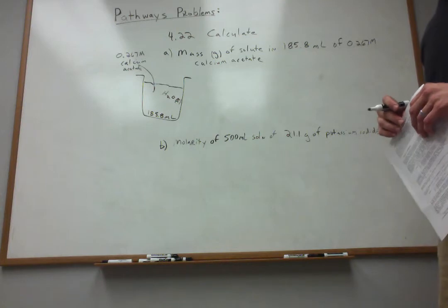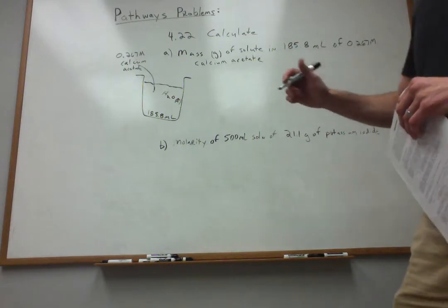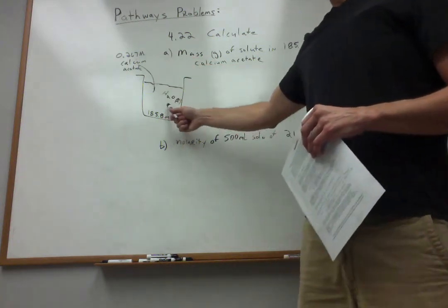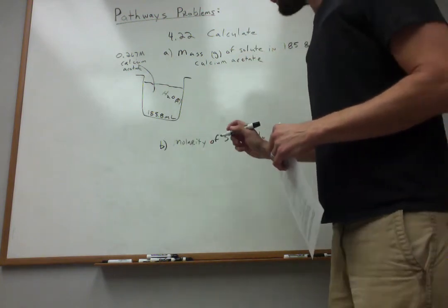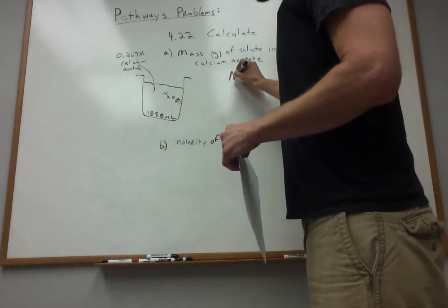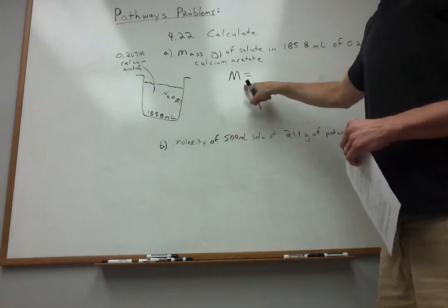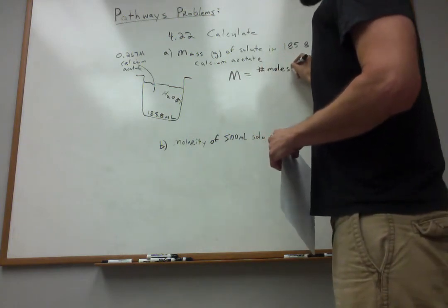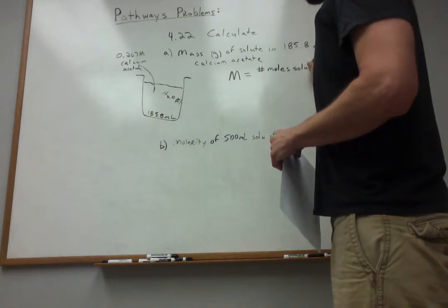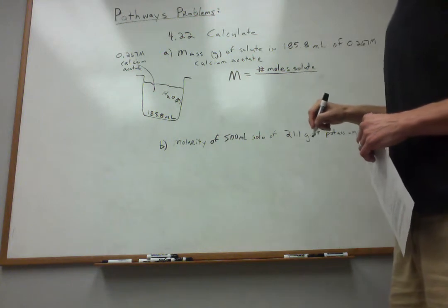It's a very important measurement of concentration. You should learn how to use molarity, how to define it, and how to perform calculations such as the one we're going to work. Because molarity discusses the relative amount of solute versus solvent in a very specific way. And how that works is molarity, which is given the capital M symbol, is defined as the number of moles of a solute. Here, that's calcium acetate. The solute is always the minor component of the mixture.